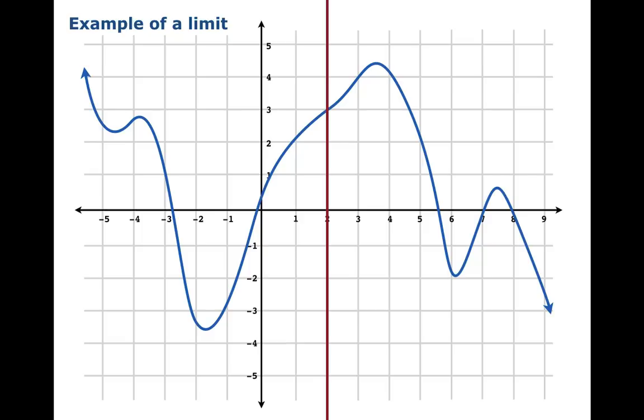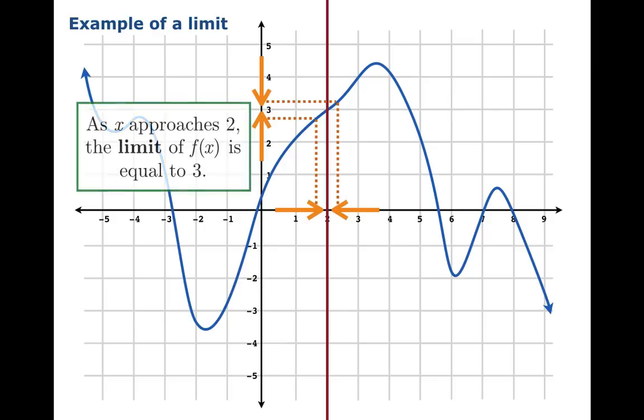And it sure looks like as the arguments get closer and closer to 2, the function values get closer and closer to the number 3. So what we'll say is that as x approaches 2, the limit of f of x is equal to 3. And we can use this notation to indicate the same thing. The limit as x approaches 2 of f of x is 3.